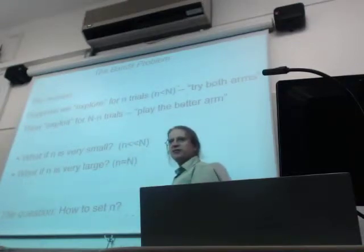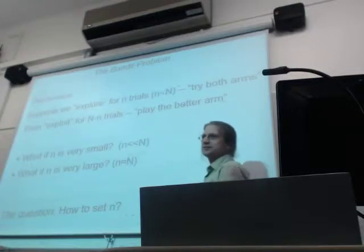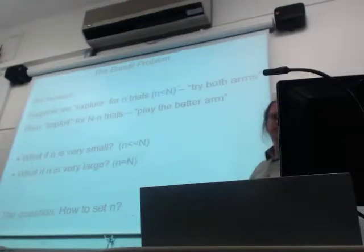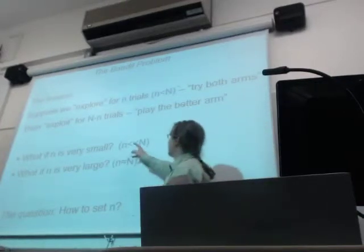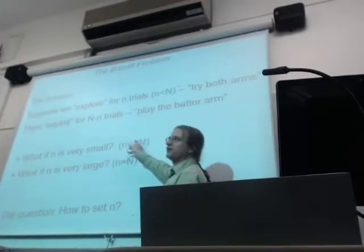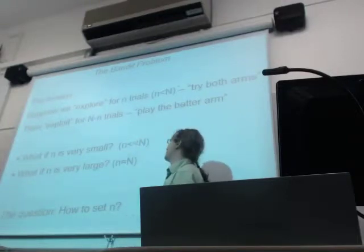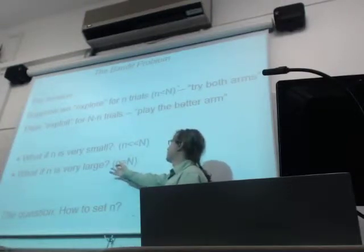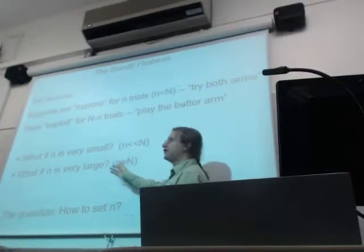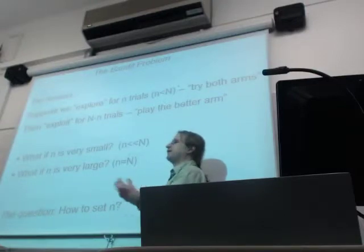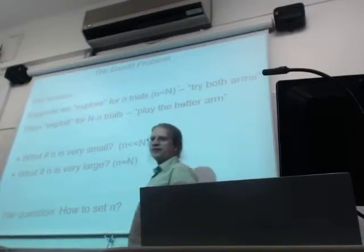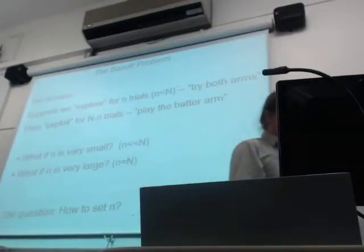What's the problem if we set small n to be small? You don't learn anything — you get lots of time to exploit the results, but there's a chance you may be making a bad decision. Conversely, if we make n large, we may be more confident in which arm is better, but we've been evenly playing our money between the machines, so we won't have as many coins left to exploit.